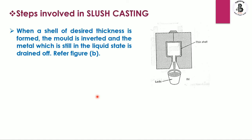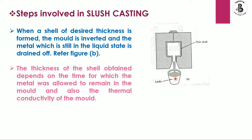Step two: when a shell of the desired thickness is formed, the mold is inverted and the metal which is still in the liquid state is drained off. Just you can see now it will be inverted after some time — the liquid form of the metals still present will be drained out into the ladle. The thickness of the shell obtained depends on the time for which the metal was allowed to remain in the mold, and also the thermal conductivity of the mold.